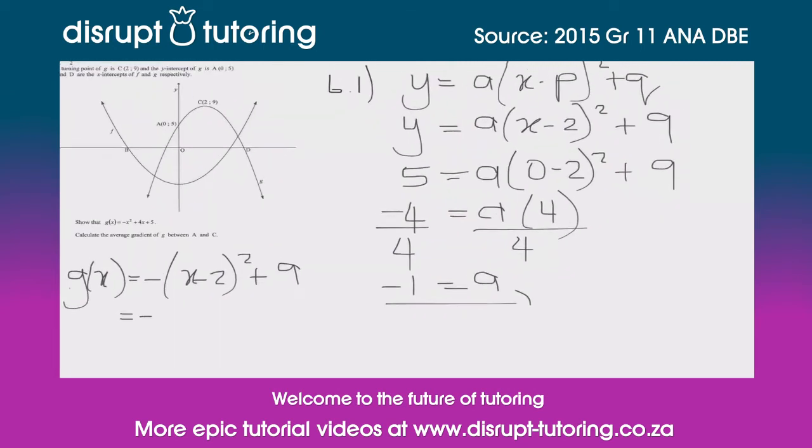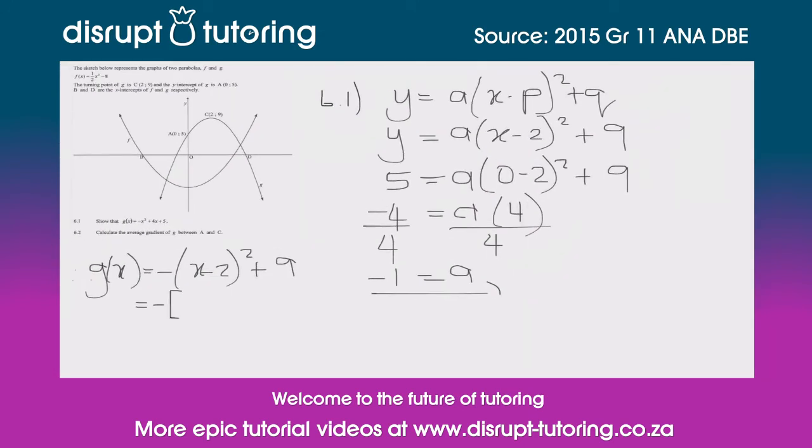We're going to keep this negative on the outside, and that's going to give us x². We square the last term, and then we multiply the two terms and double them, so that's going to be -4x. We close that bracket +9. We then multiply that negative in, which gives us -x² + 4x - 4 + 9.